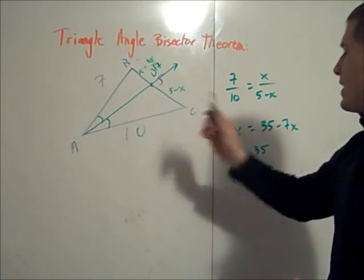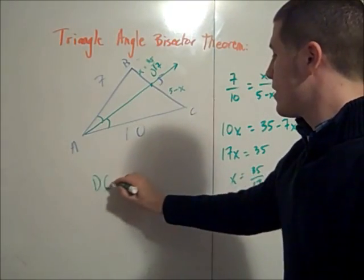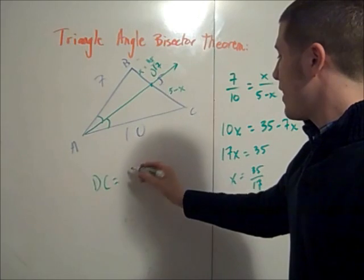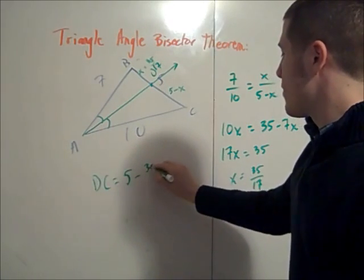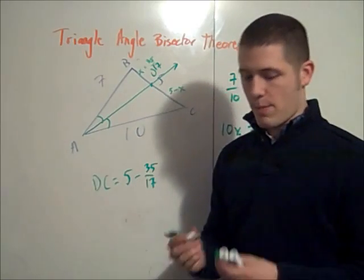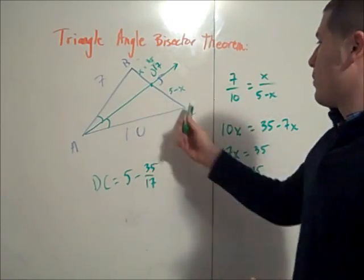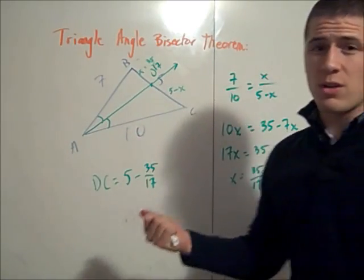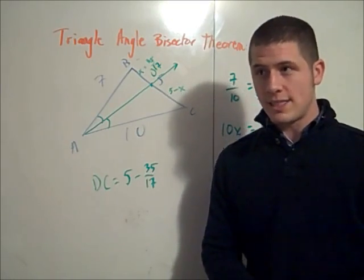And so to find DC, DC is just 5 minus 35 seventeenths. So you can find DC, find a common denominator and do that subtraction, and that will get you the length of DC. So this is how you use the triangle angle bisector theorem.